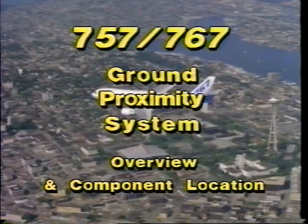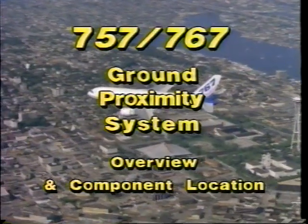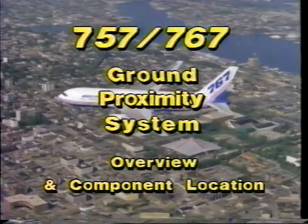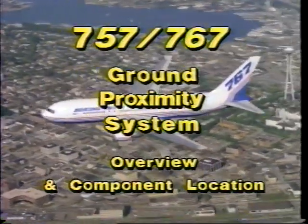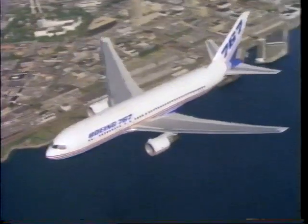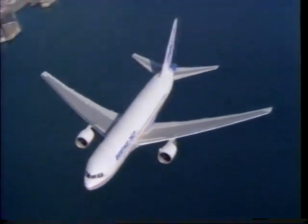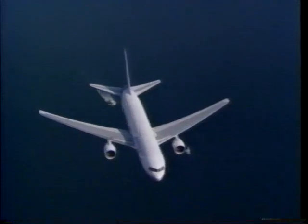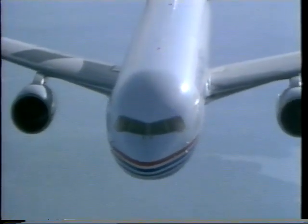The ground proximity warning system for the 757 and 767 provides visual and voice warning and advisory messages. These messages alert the flight crew to unsafe conditions due to terrain proximity. This program presents the ground proximity warning and alerting modes.